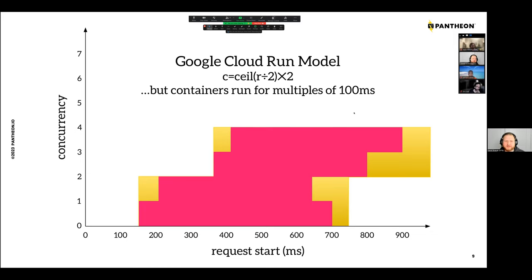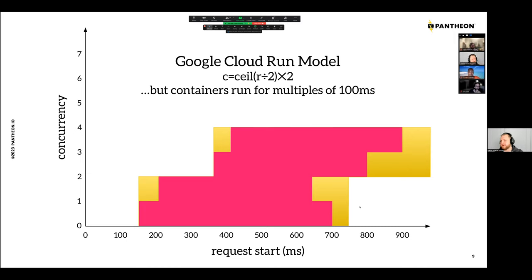That last model isn't totally accurate for what you can actually buy off the shelf, because billing happens in certain intervals. In the case of the system we're building on — for our Front-End Sites product and the future main runtime — there are 100-millisecond windows for billing. So if you need 801 milliseconds of container, you actually pay for 900 milliseconds. We have to build that into the cost model to avoid underestimating.